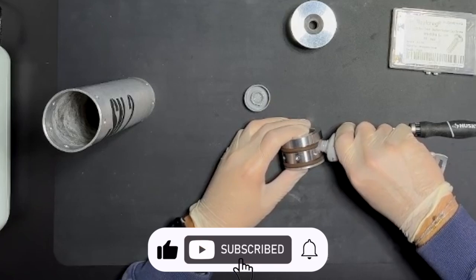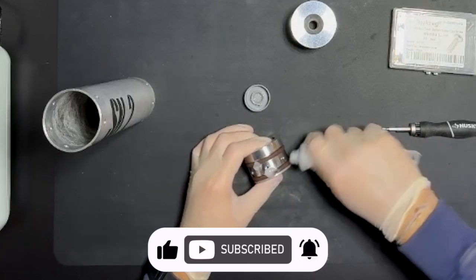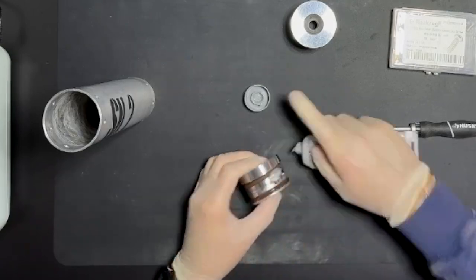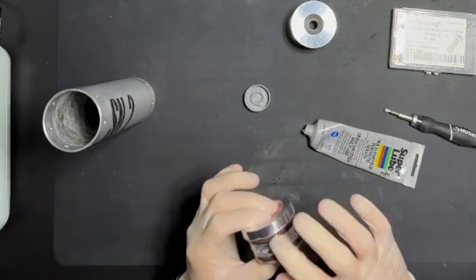Once the o-rings are on the forward closure, I grease it up so it fits in the casing better. The grease also helps it come off easier after the static fire. Here it is all greased up. I put a lot on.